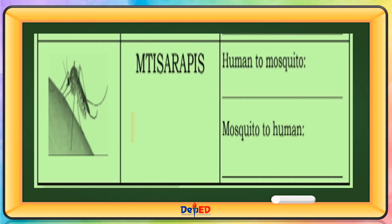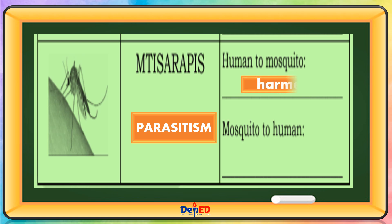Parasitism: Human to mosquito — Harmed. Mosquito to human — Benefited.